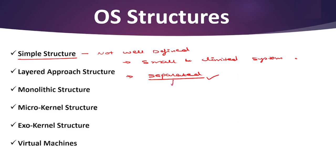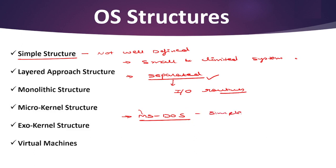Because of this separation, programs can access the input-output routines, which can cause unauthorized access to those routines. The interfaces and levels are not well separated in this case. MS-DOS — Microsoft Disk Operating System — is an example of the simple structure of operating system. In MS-DOS, application programs are able to access the basic input-output routines, and these types of operating systems cause the entire system to crash if one of the user programs fails.